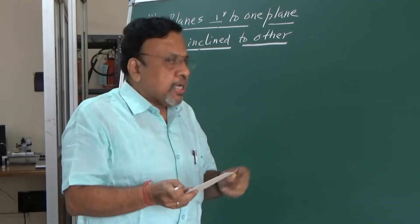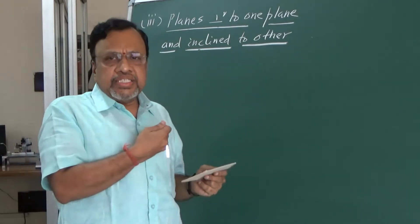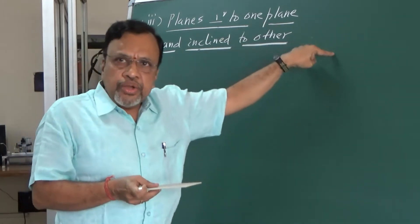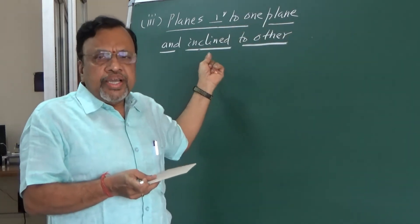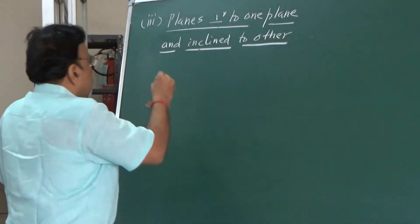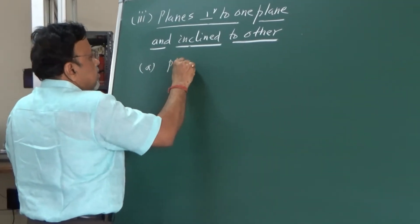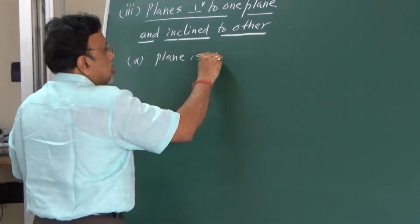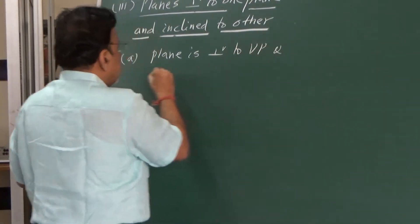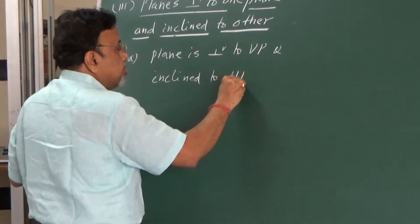As illustrated, we get two cases. Case one: the lamina is perpendicular to HP and inclined to VP. Case two: the lamina is inclined to HP and perpendicular to VP. Let us consider them one by one. Case one: the plane is perpendicular to VP and inclined to HP.